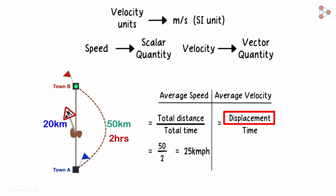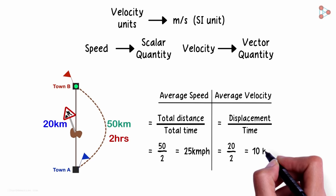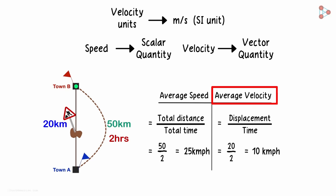What is the displacement here? It's 20 kilometers up north. Distance with direction. So the average velocity will equal 20 kilometers over 2 hours which will equal 10 kilometers per hour. That's the concept of average velocity.